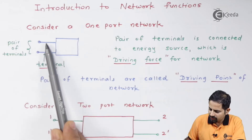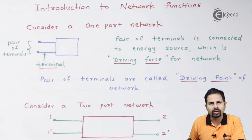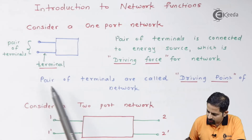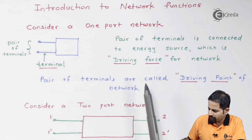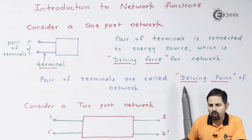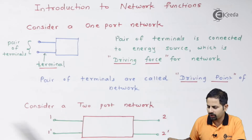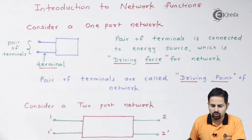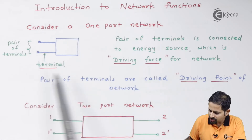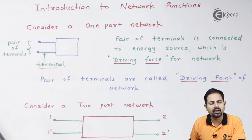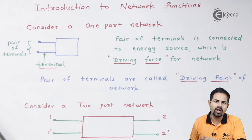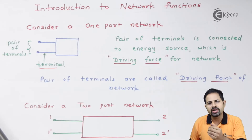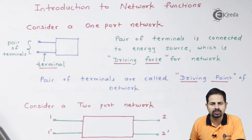These pair of terminals, shown here in blue color — terminals meaning some wires or conductors — are called the driving point of the network. They are connected to some kind of energy source. This is true for a one-port network. There can also be two-port, three-port, or N-port networks. Majorly we deal with two-port networks.